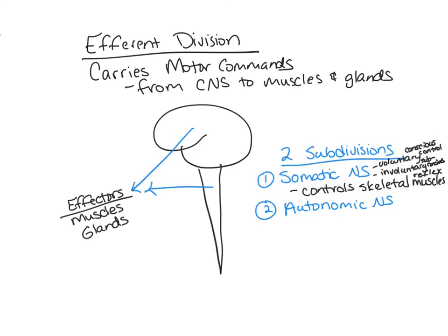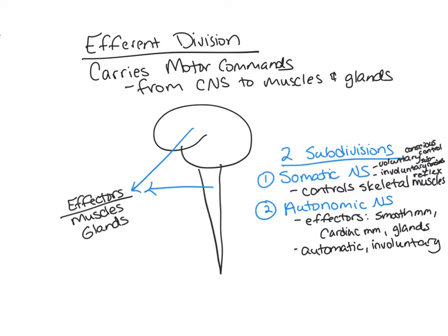The second subdivision of the efferent division is the autonomic nervous system. Its effectors include smooth muscles, cardiac muscles, and glands. The autonomic nervous system provides an automatic and involuntary response, and includes two subdivisions: the sympathetic and the parasympathetic divisions.